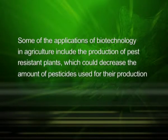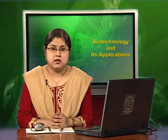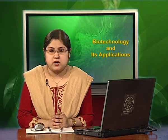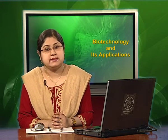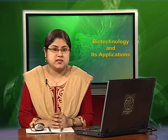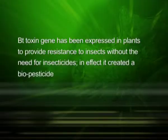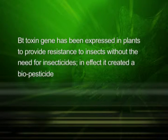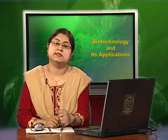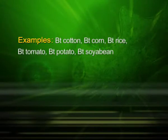Some of the applications of biotechnology in agriculture include the production of pest resistant plants, which could decrease the amount of pesticides used for their production. Bt toxin is produced by a bacterium called Bacillus thuringiensis. The Bt toxin gene has been cloned from the bacteria and expressed in plants to provide resistance to insects without the need for insecticides, effectively creating a biopesticide. Some examples of pest resistant plants are Bt cotton, Bt corn, Bt rice, Bt tomato, Bt potato, and Bt soya bean.